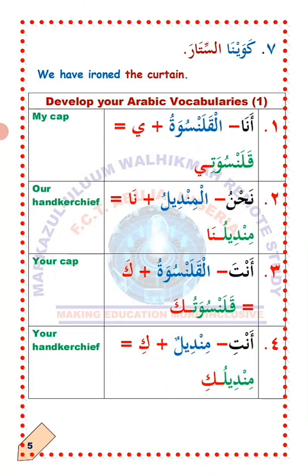Now we are going to discuss how to change certain words in Arabic so as to indicate ownership. Wahid, number one — Anna, I. So how do we change the word al-kolansuwa, which means 'the cup,' to indicate ownership for Anna? Step one: you drop aleph and lam. Step two: you attach ya unto the last letter. Al-kolansuwa will now become kolansuwa ti, which means 'my cup.'